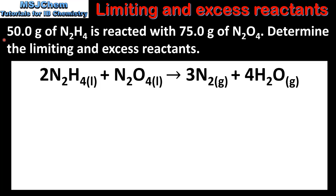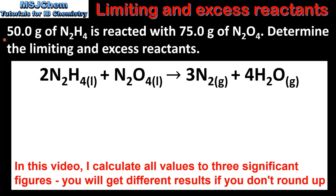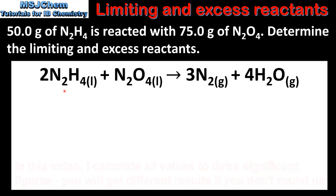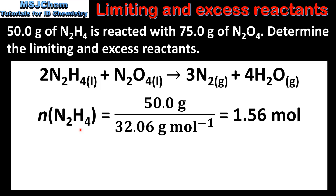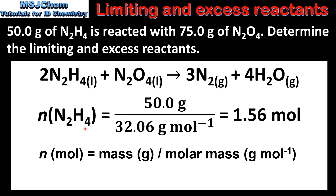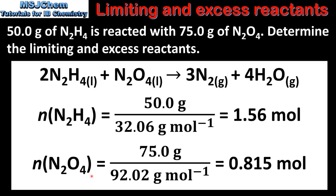In our first example, 50g of N2H4 is reacted with 75g of N2O4. Determine the limiting and excess reactants. The first step is to determine the amount in moles of N2H4 and N2O4. Starting with N2H4, we divide the mass in grams by the molar mass, which gives us 1.56 moles. Next we do the same for N2O4 — divide the mass in grams by the molar mass — which gives us 0.815 moles.